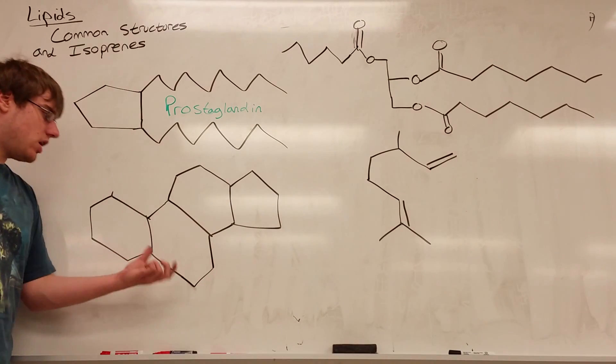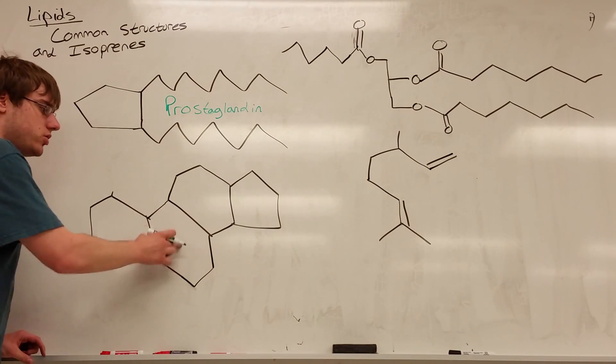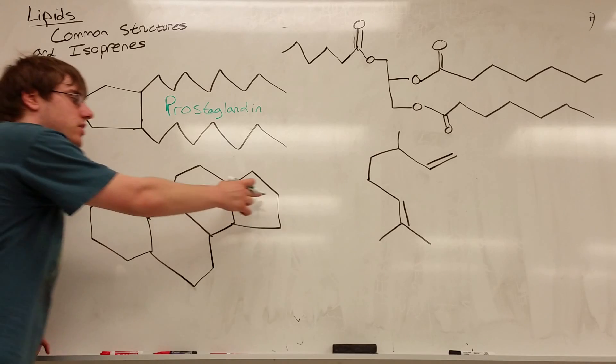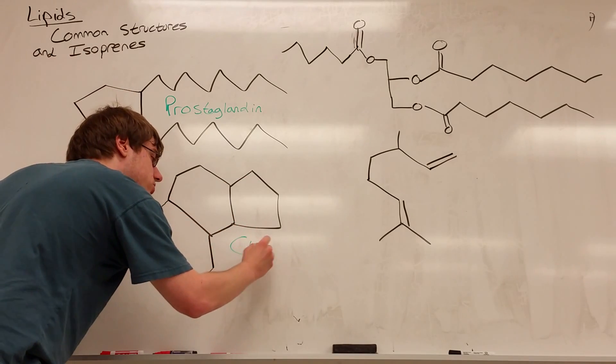The next one to talk about is this: if you ever see a structure that has one, two, three six-membered rings and then a five-membered ring, this is a derivative of cholesterol.